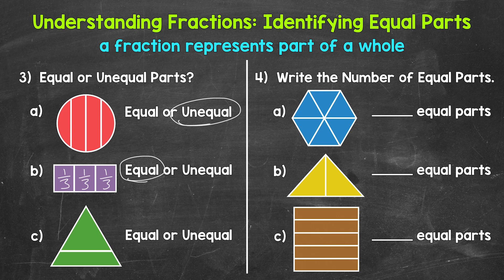Moving on to C — do we have equal or unequal parts here? Well, these are unequal parts; they are not the same size. Let's move on to number four, where we need to write the number of equal parts each whole is divided into.